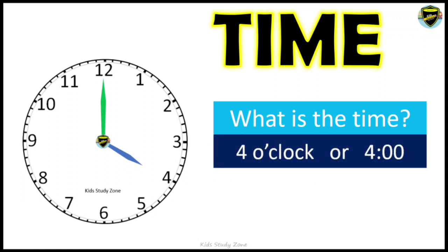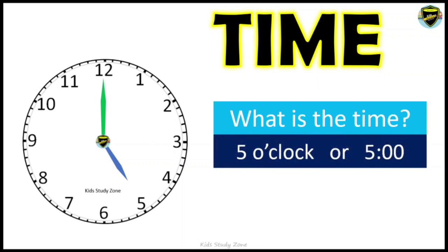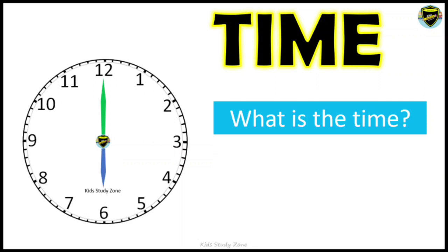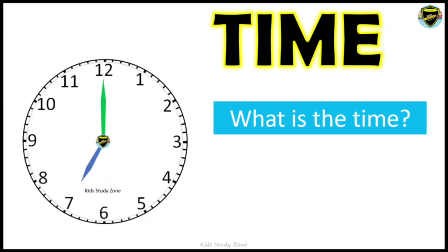What is the time? The hour hand is pointing towards number 4 — this is how 4 o'clock looks. What is the time? The hour hand is pointing towards number 5, and the minute hand is pointing towards 12 — it's five o'clock. What is the time? The hour hand is pointing towards six — you can see both the hour hand and minute hand in a straight line — this is six o'clock.